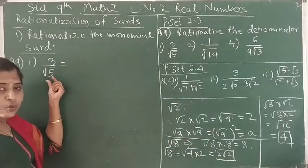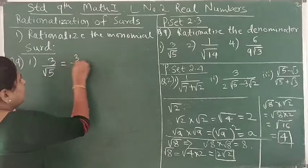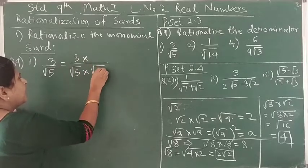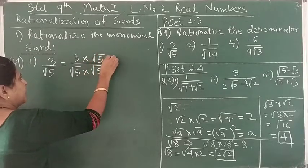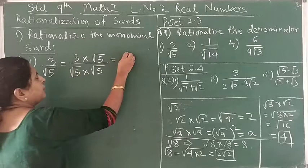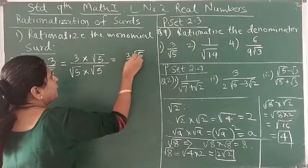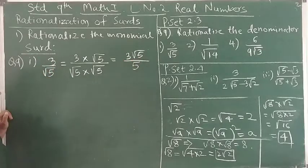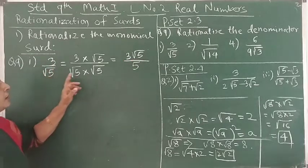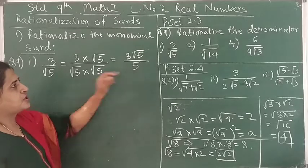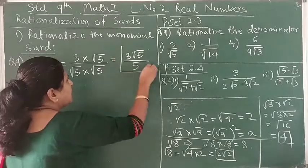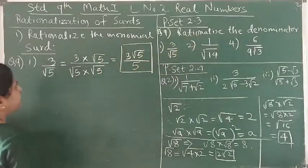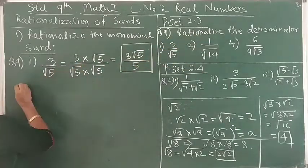Here, the denominator is square root of 5, which has no other factor. So both numerator and denominator — that is 3 and square root of 5 — should be multiplied by square root of 5. The numerator becomes 3 square root of 5, and square root of 5 into square root of 5 in the denominator becomes 5. So we get the denominator as a rational number — the answer is 3√5 upon 5. We have rationalized the denominator.